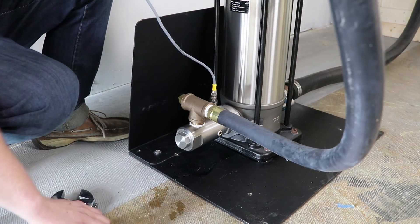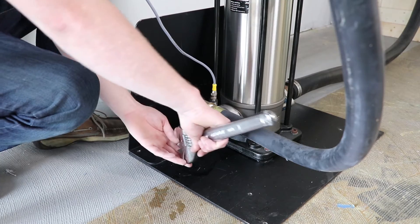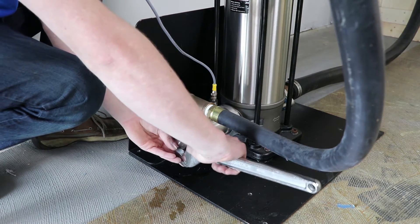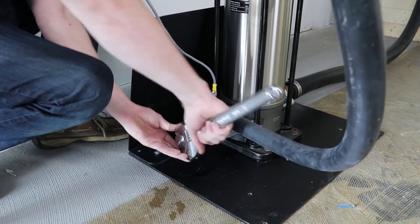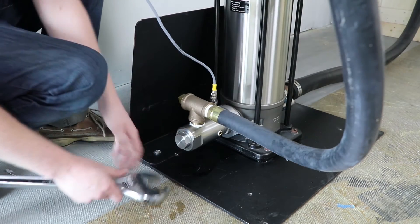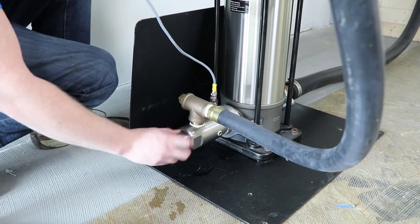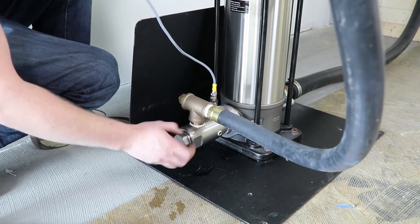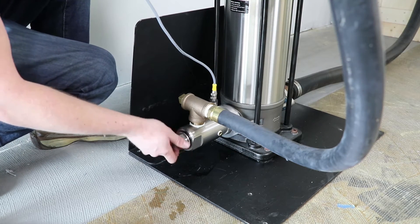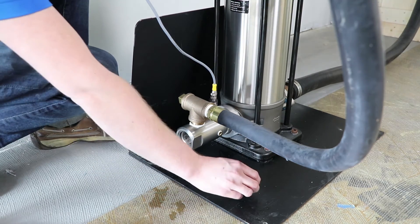After bleeding residual pressure we can use our adjustable wrench to remove the Y strainer cap. There will still be residual water remaining in the system that will bleed out as the cap is removed. We can take the cap and set it aside for right now.